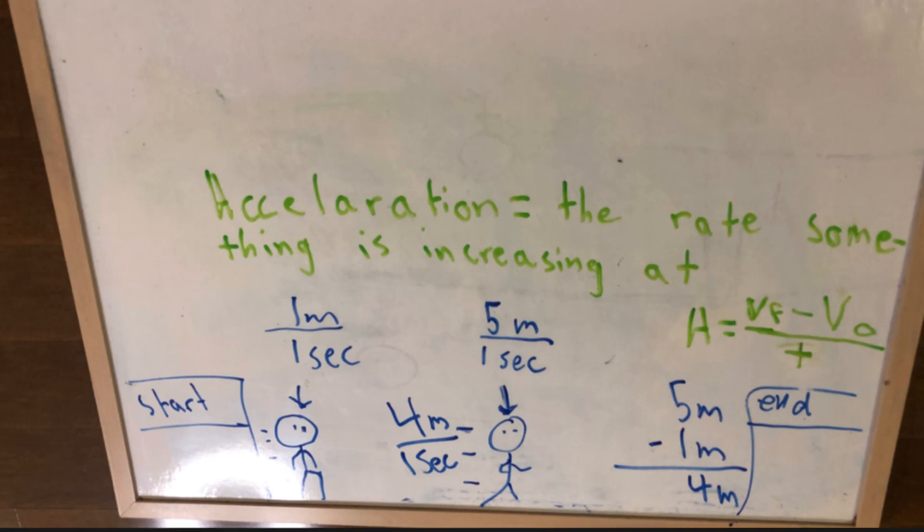So let's say it took you 1 second to travel from 1 meter a second to 5 meters a second. That means that you will accelerate at 4 meters a second.